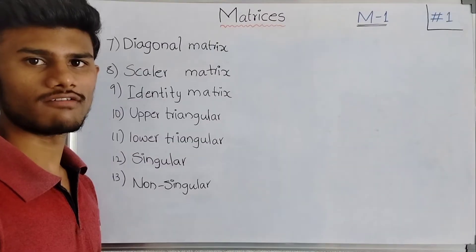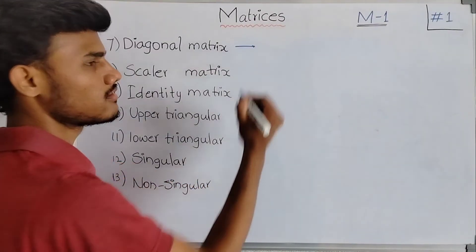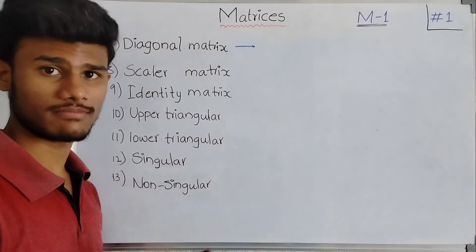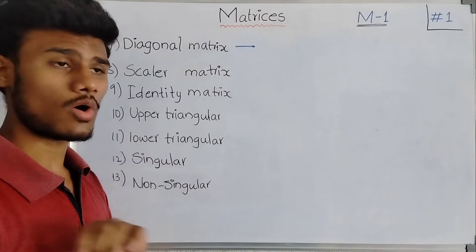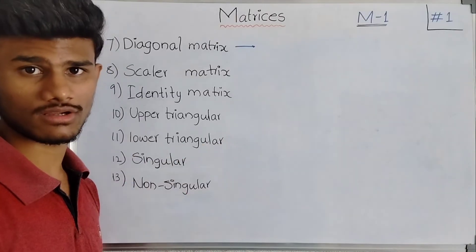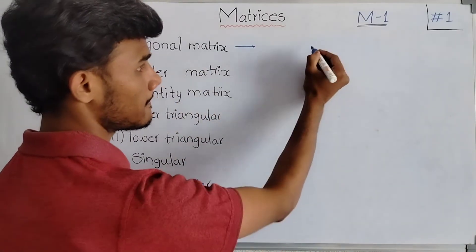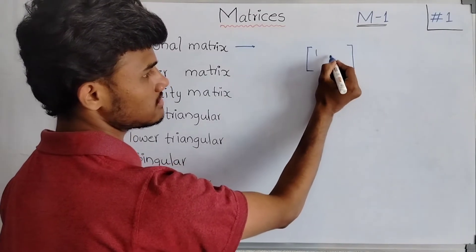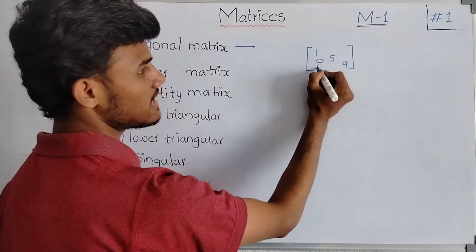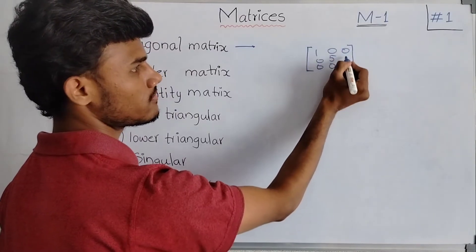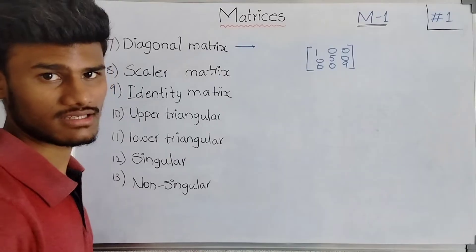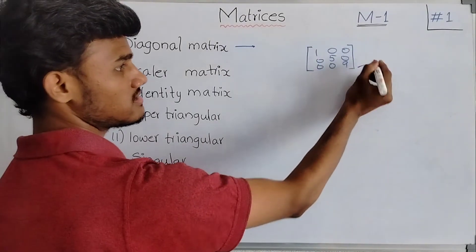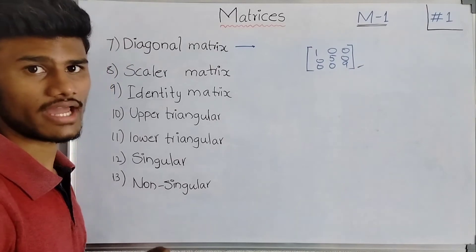The next matrix is the diagonal matrix. What is meant by a diagonal matrix? A diagonal matrix is a square matrix in which all the elements are equal to 0 except the diagonal elements. Except the diagonal elements, all the other elements are equal to 0. This type of matrix is called a diagonal matrix.